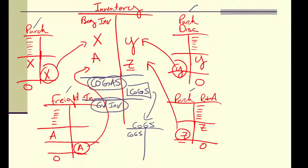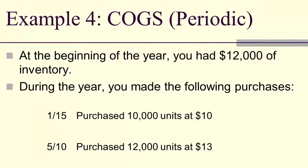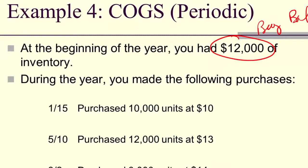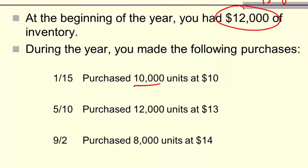Let's take a look at an example of calculating cost of goods sold. Let's assume that you own a small business and at the beginning of the year when you walked into your store you had $12,000 of inventory on hand. So that right there is going to be your beginning balance. During the year you made three purchases. You purchased 10,000 units for $10 each, 12,000 units for $13 each, and 8,000 units for $14 each.